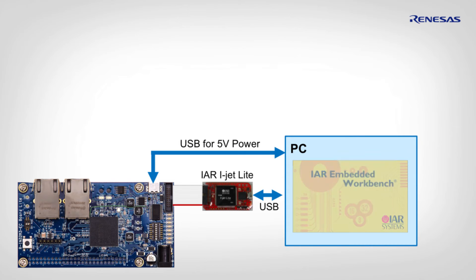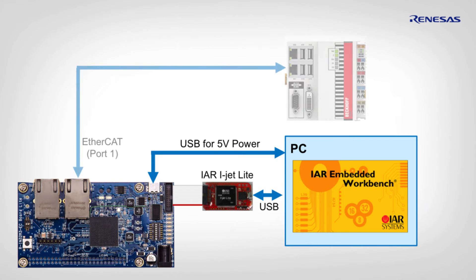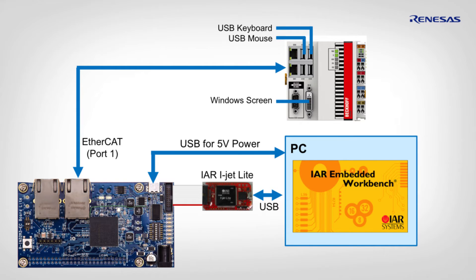For this we use the IAR I-jet light debugger which is included in the kit. In the IAR workbench we can compile the EtherCAT demo, download it to the board, start and debug it. In a second step we build the EtherCAT network and connect the RIN board with the Beckhoff IPC, which is equipped with screen, keyboard and mouse and which is running the TwinCAT network tool.